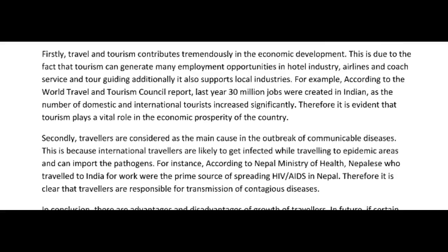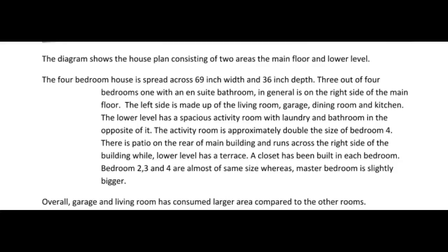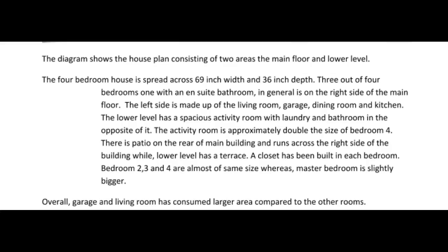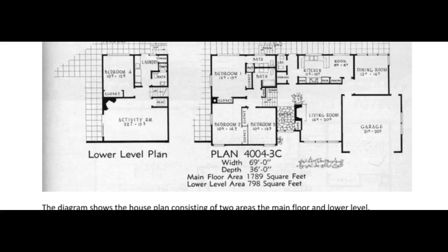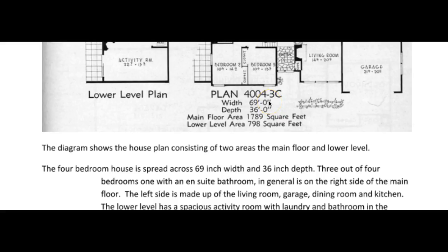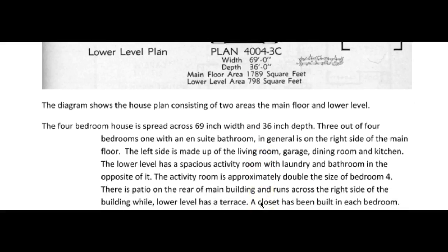You're doing well, Robina. Keep on improving. So the diagram shows the house plan consisting of two areas — the main floor and the lower level. The four bedroom house is spread across 69 foot width and 36 foot depth. So you'd be more likely to say the four bedroom house has a width of 69 foot and a depth of 36 foot — that would be more accurate.